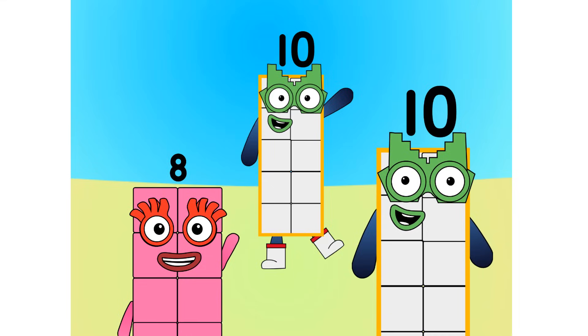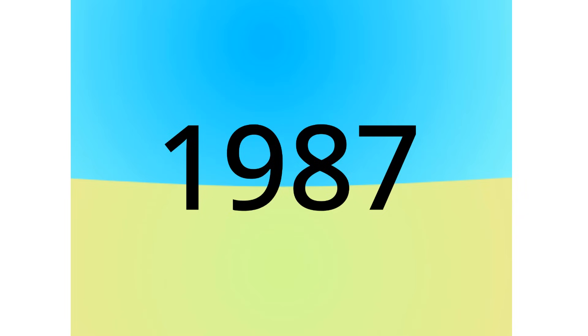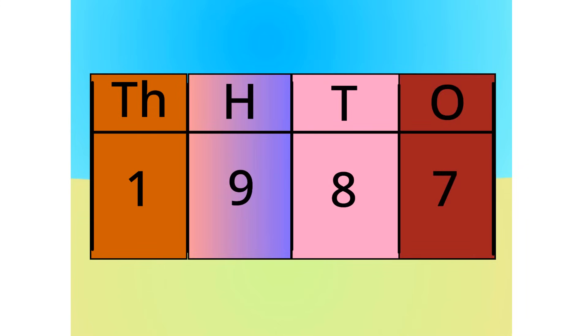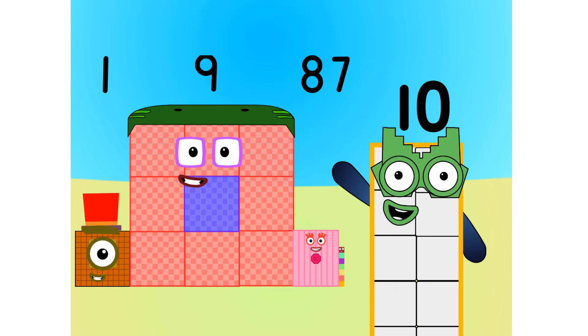Let me show you all why we count in base 10 in a few different ways. First off, the number table. Let's do 1,987 for example. Let's split it into its units. This number is made up of 1 nine-hundred, 8 tens, and 7 ones. Let's see this in block form. As you can see, this number is 1 nine-hundred, 8 tens, and 7 ones.